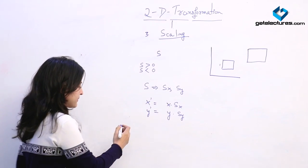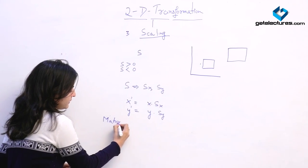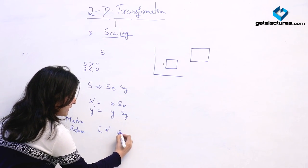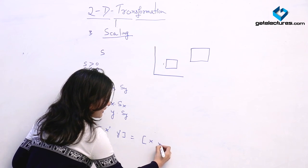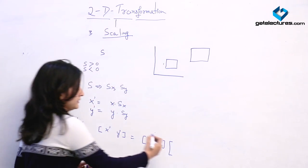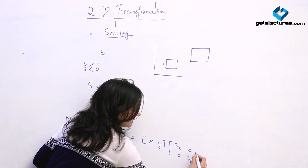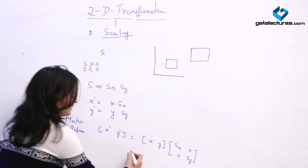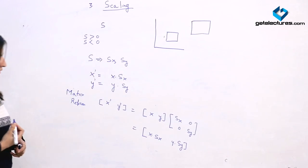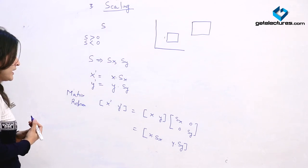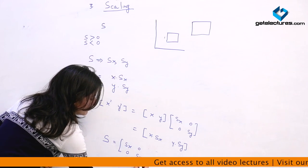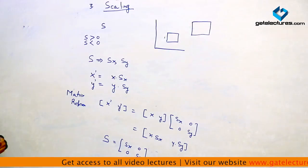We can also represent this in matrix form. In matrix representation, x dash y dash equals x y — the previous coordinates — multiplied by the scaling matrix: sx 0 and 0 sy. So this is the scaling transformation; we will directly get x dot sx and y dot sy after solving. Like in rotation we have the rotation matrix R, here we directly represent the scaling matrix S with values sx 0 and 0 sy.